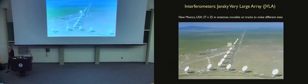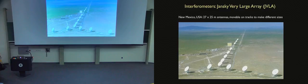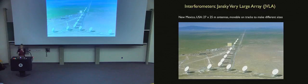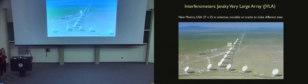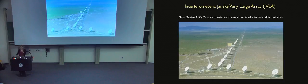The most famous interferometer is the Jansky Very Large Array - 27 twenty-five-meter antennas on tracks, so they can be moved relative to each other. They have four or five different configurations: spread very far apart for high resolution on bright objects, or packed closer together to maximize sensitivity for faint objects. This is the power of an array: you can optimize both sensitivity and resolution.